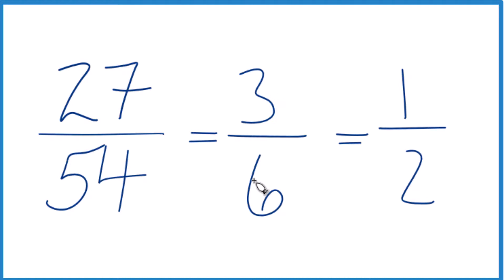You can find kind of an intermediary fraction and then reduce that or simplify that fraction. Either way, 27 54ths is simplified to one half, and that's in lowest terms.